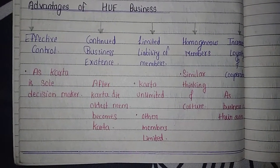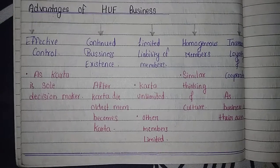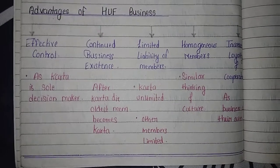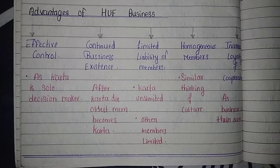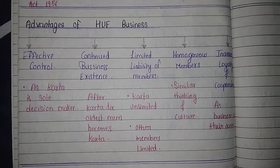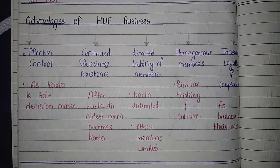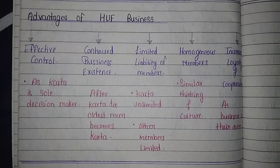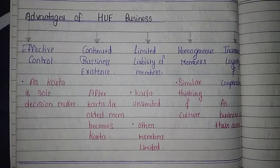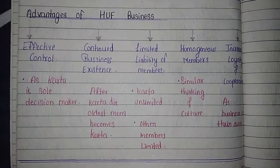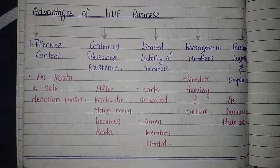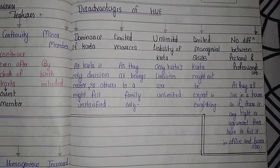The fourth advantage is homogenous members — since all members are from a similar family, their thinking and culture are also similar, which creates an advantage for HUF. The last advantage is increased loyalty and cooperation — since the business belongs to their own family, their loyalty towards the business is greater.